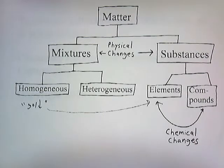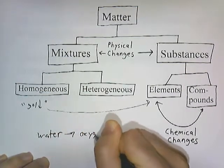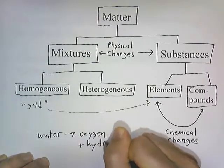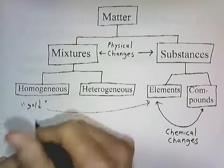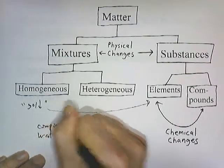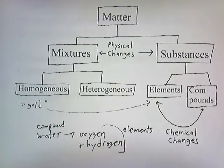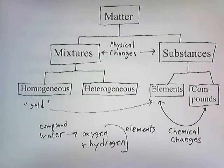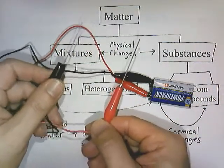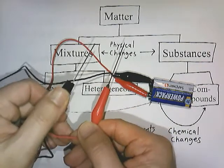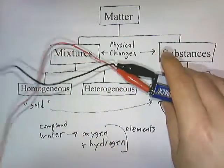Now I want to show a demonstration of converting water into oxygen and hydrogen — this is going to be a chemical change, turning a compound into elements. I have a battery and two little wires with pencil leads at the ends. I'm going to stick these ends into the water, and what will happen is that at one end hydrogen gas is going to be made and at the other end oxygen gas will be made.